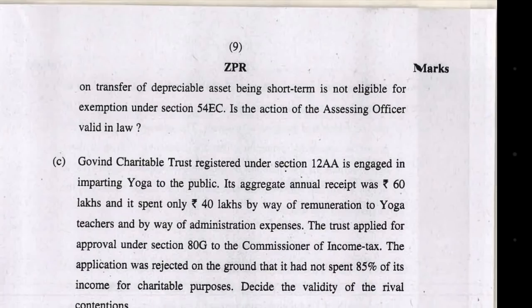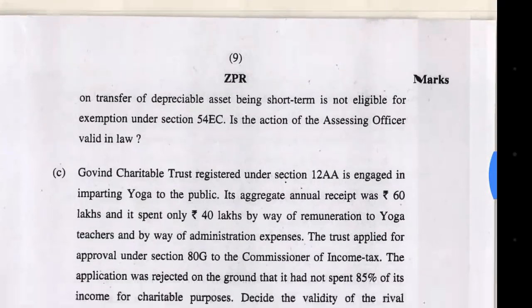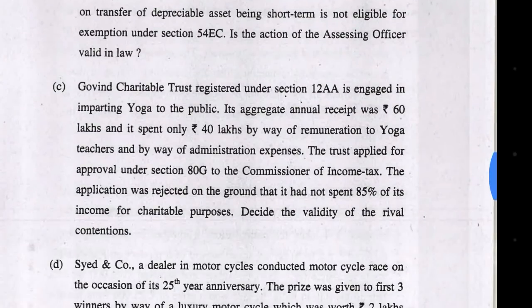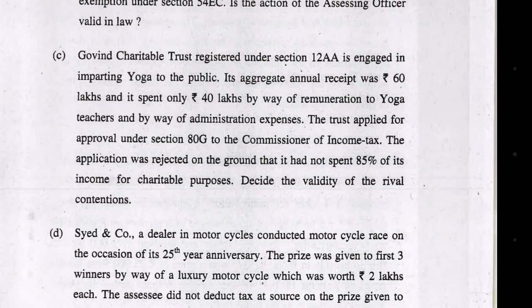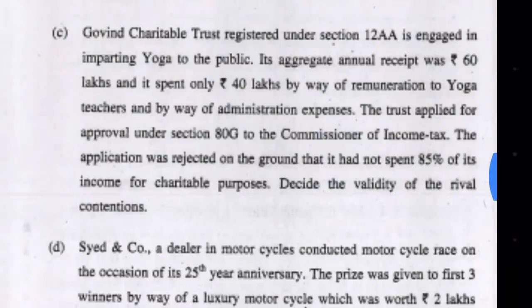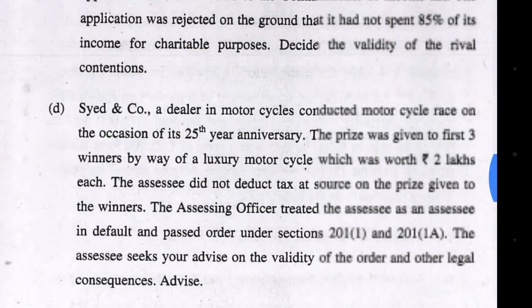Regarding Section 54EC bonds: the rule is simple — long-term capital gain arises when the asset is held for more than 36 months. The C point covers charitable trust: 85% of income must be spent. If 85% is not spent for any reason, the trust must give notice and spend the shortfall in the next year. All these provisions needed to be stated here.